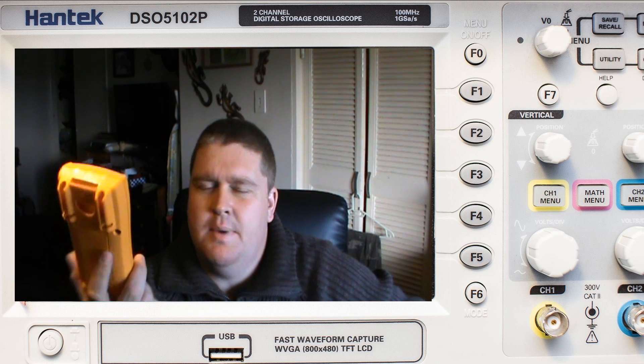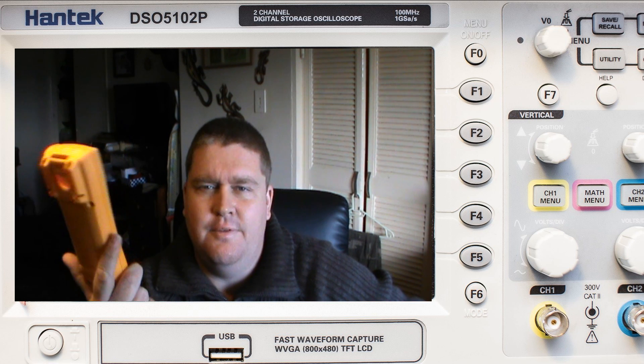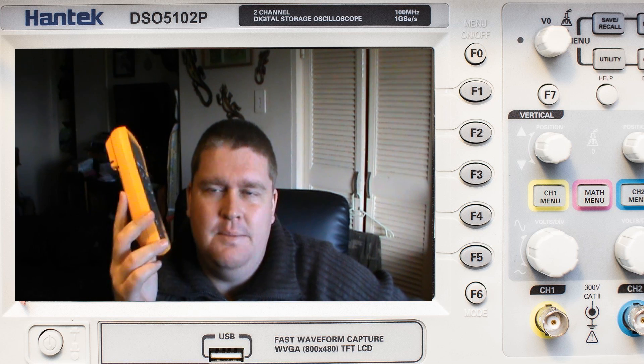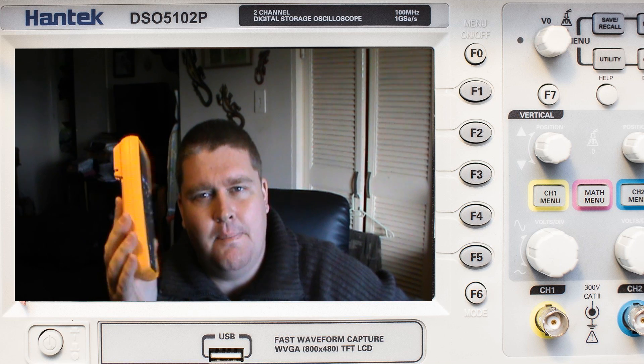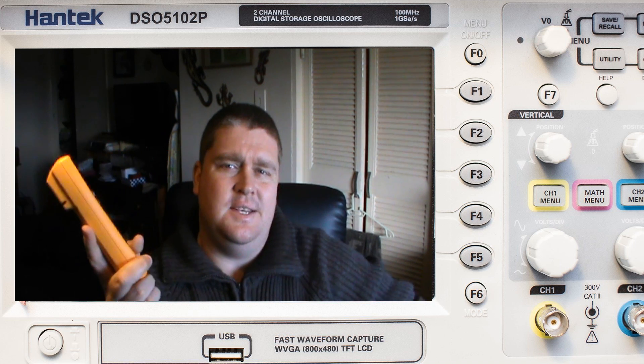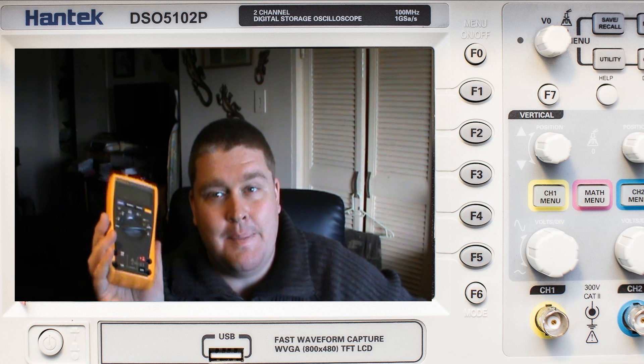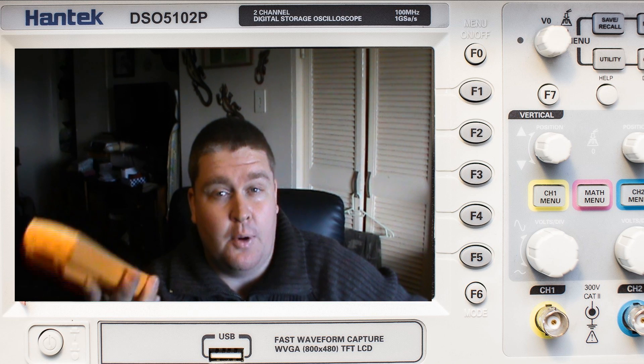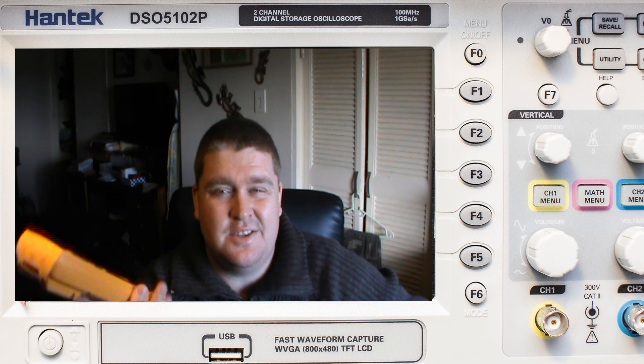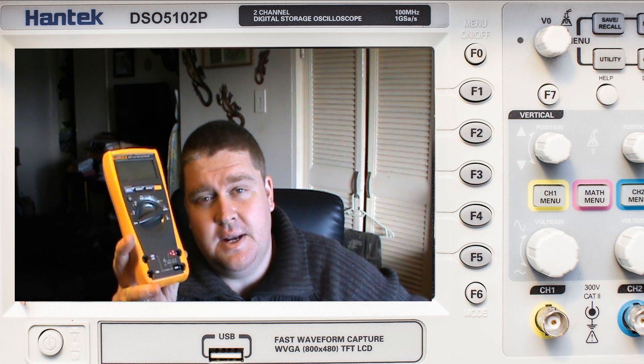So, guys, basically in closing, that is pretty much it for the Fluke 177 basic usage review. The meter, I can recommend it for electronics benches and stuff like that, but I must tell you it is a little bit pricey for what it does. A lot more can be acquired for this sort of money when buying an electronics multimeter such as with Bremen. The TBM 829 does a whole lot more than the Fluke 177 for the same sort of money as what you're going to spend here.